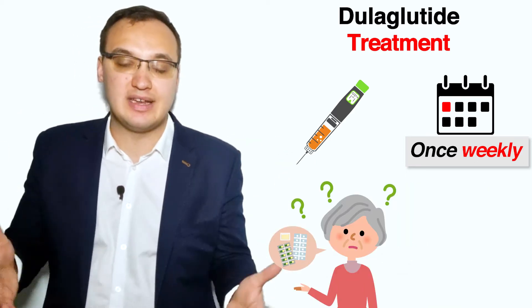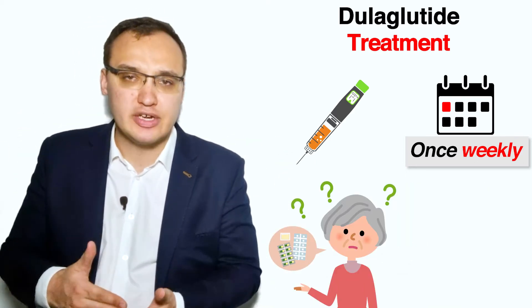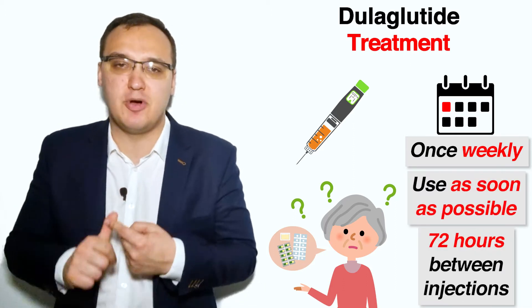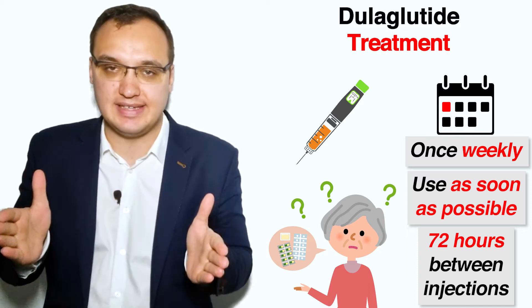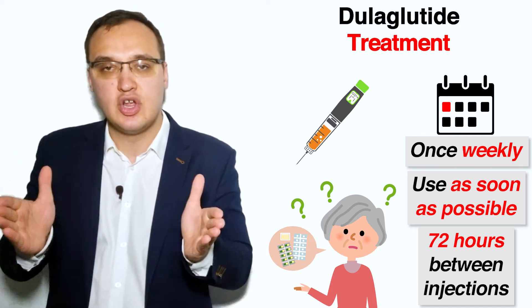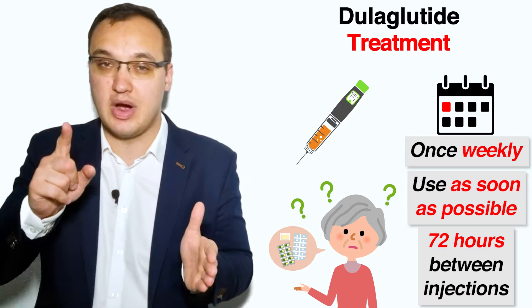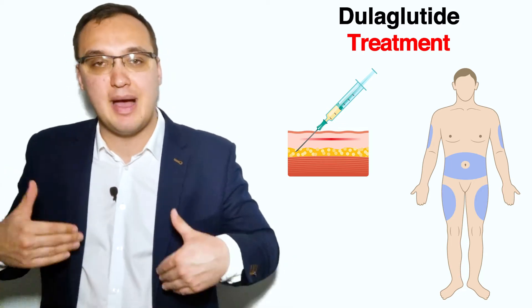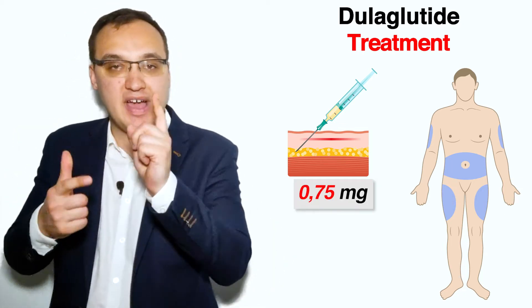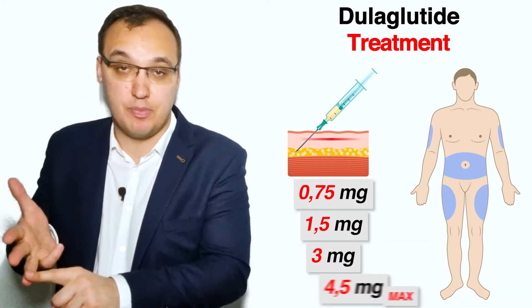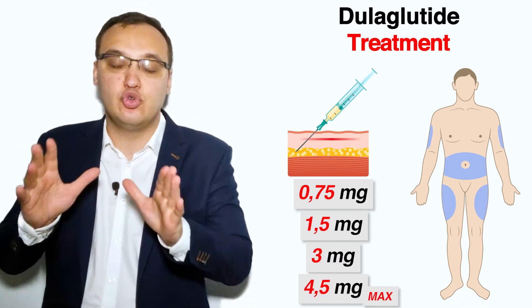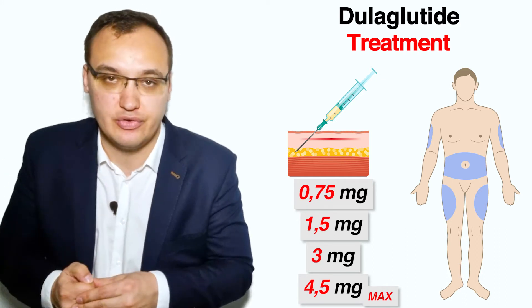If you forget a dose of dulaglutide, it should be administered as soon as possible within three days, and the time between two injections should be at least 24 hours. Dulaglutide should be subcutaneously injected into the abdomen, thigh, or upper arm. The doses are 0.75 mg, 1.5 mg, 3 mg, and 4.5 mg — which is the maximum dose — and dulaglutide cannot be given intravenously or intramuscularly.